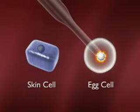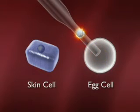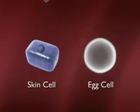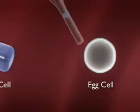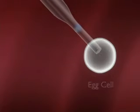This process is going to be used to make an embryonic stem cell. The egg cell has the nucleus removed. The nucleus from a skin cell is then injected into that egg. That egg can then initiate development by dividing, making a blastocyst.